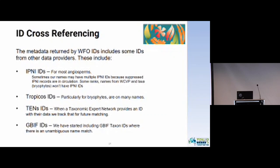Tropicos IDs are also included with the metadata, particularly for bryophytes, and they are on many other names. The taxonomic expert networks may provide an ID with their data, such as Solanaceae Source, and we track those IDs for future matching when updates are sent for the taxonomic expert network. Finally, we've started including GBIF taxon IDs where there is an unambiguous name match.